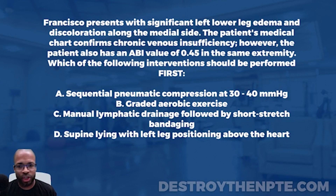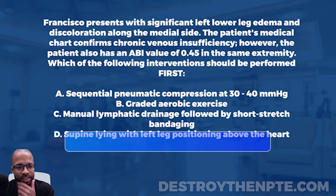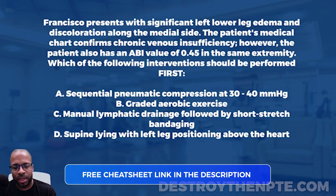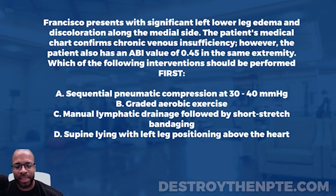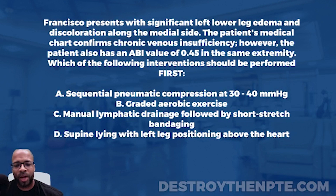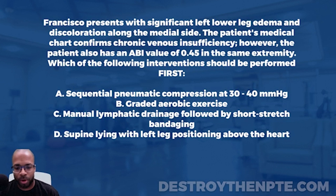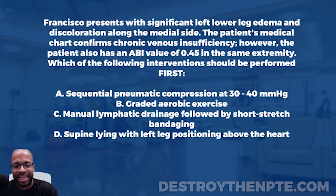For this week's Challenge Wednesday, we have our patient Francisco. Francisco presents with significant left lower leg edema and discoloration along the medial side. The patient's medical chart confirms chronic venous insufficiency. However, the patient also has an ABI value of 0.45 in the same extremity. Which of the following interventions should be performed first? A) sequential pneumatic compression at 30 to 40 mmHg, B) graded aerobic exercise, C) manual lymphatic drainage followed by short stretch bandaging, and D) supine lying with left leg positioning above the heart.